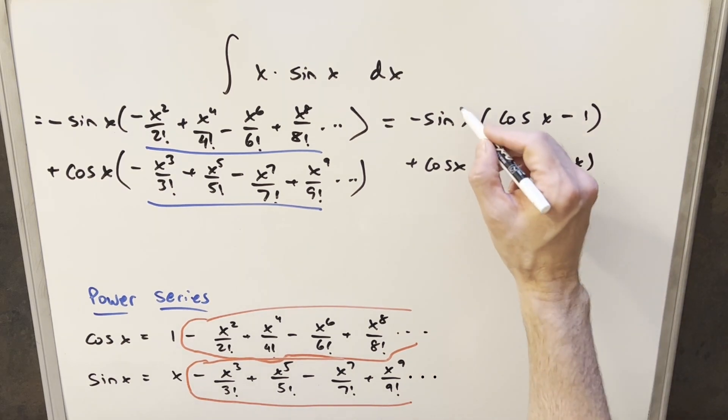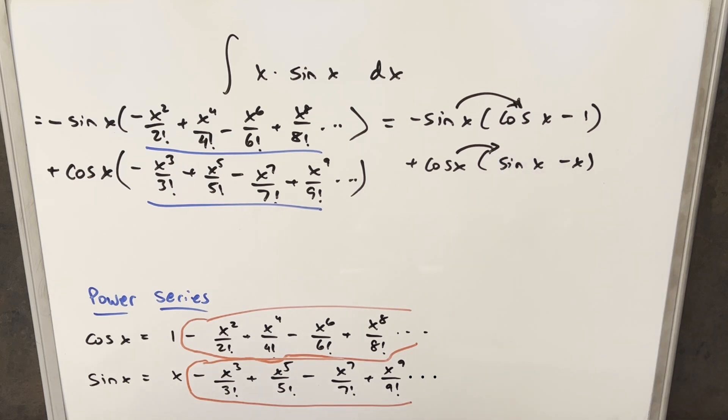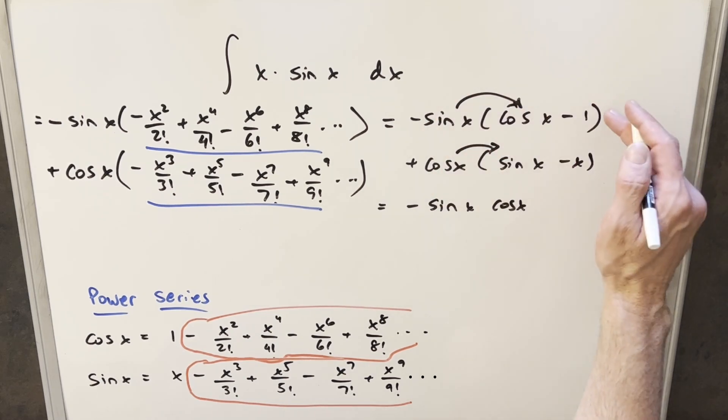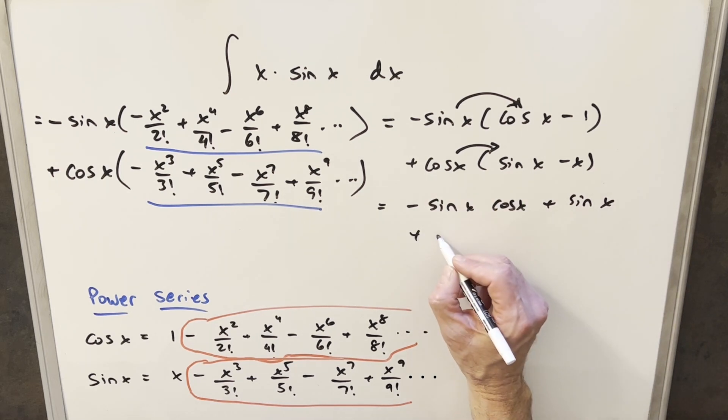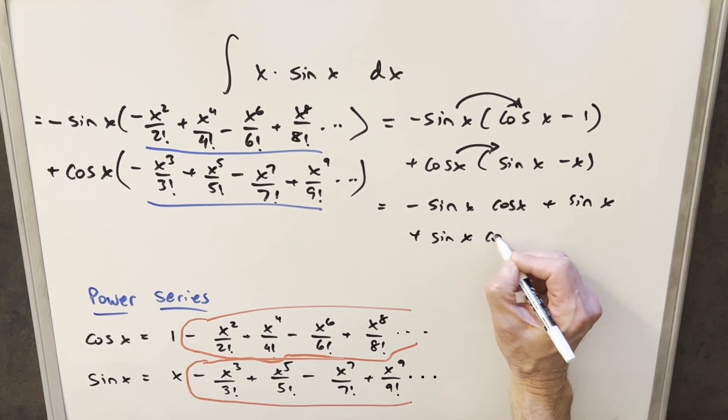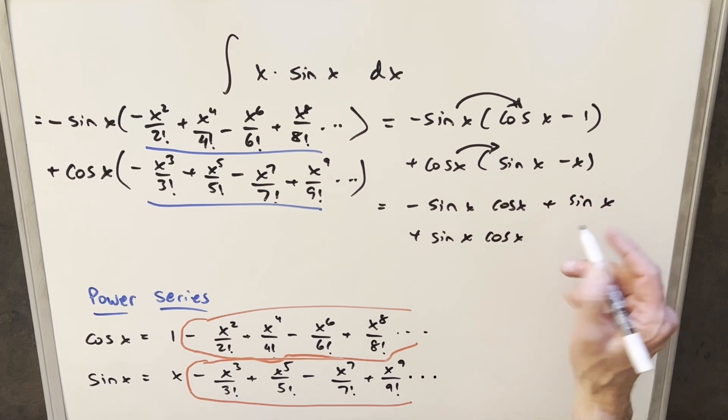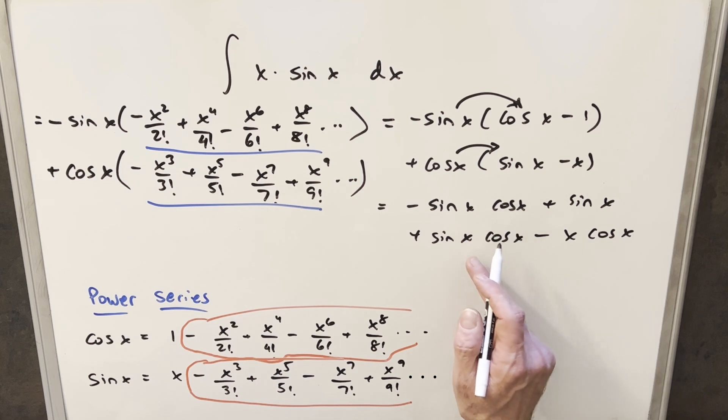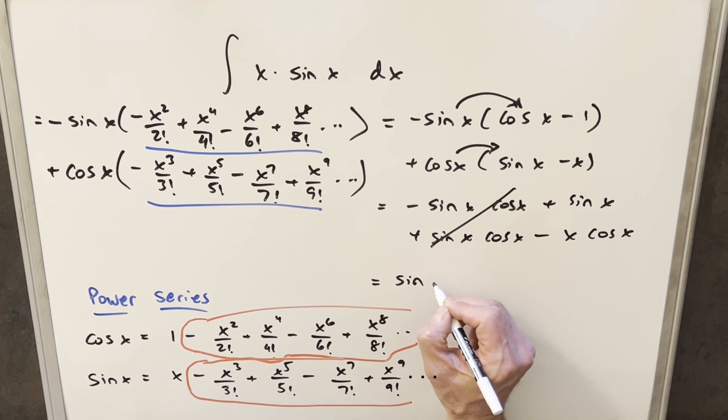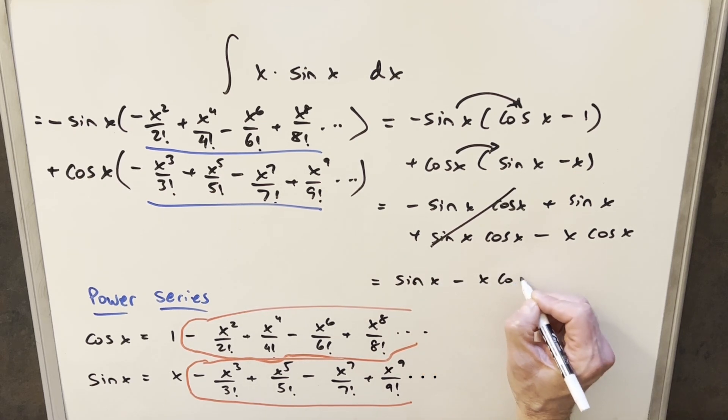I'm just going to distribute this in here and in here and simplify, and then we should be done. We have minus sine x, cosine x. This is going to become, multiplying into the one, plus sine x. Here we're going to have a plus sine x, cosine x, just changing the order. Then here we're going to have minus x, cosine x. Then minus sine x, cosine x plus sine x, these terms are going to cancel. We're just left with our final solution, sine x minus x, cosine x plus c. And that's it.